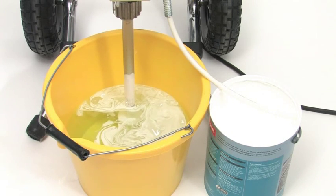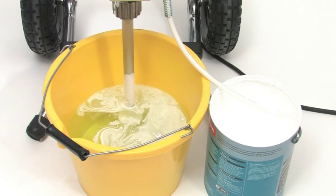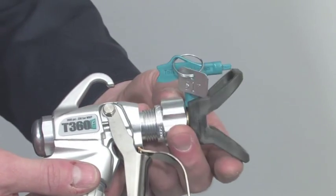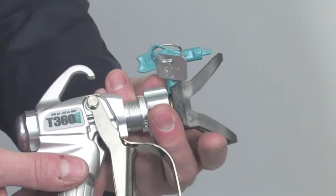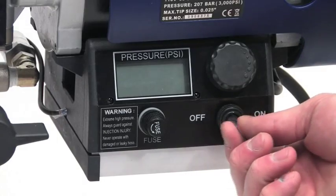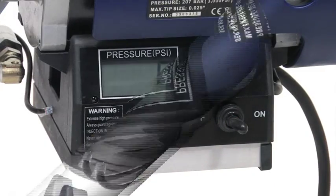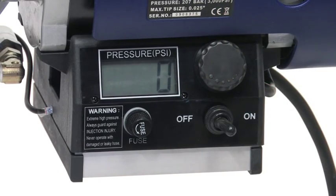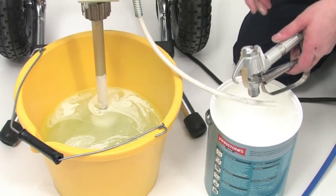Place the suction tube into a bucket of clean water and the prime tube back into the tin of paint. Now, unscrew the tip guard assembly from the spray gun. Next, turn the power switch to on. Turn the pressure control knob right to start the pump operating. When water starts coming through the prime tube...